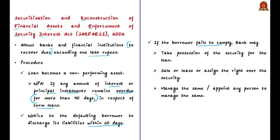If the borrower fails to comply with the notice, the bank may take one or more of the following measures: first, it can take possession of the security for the loan; second, it can sell, lease, or assign the right over the security, or manage the same, or appoint any person to manage it.